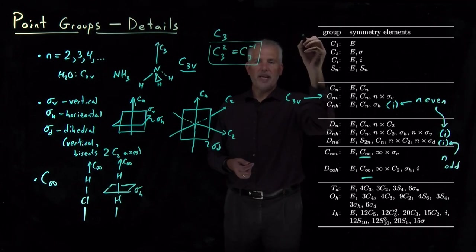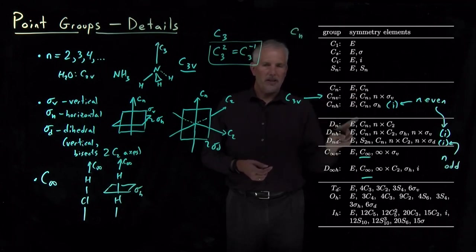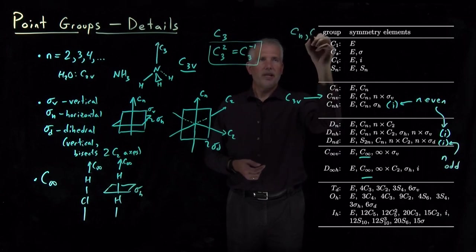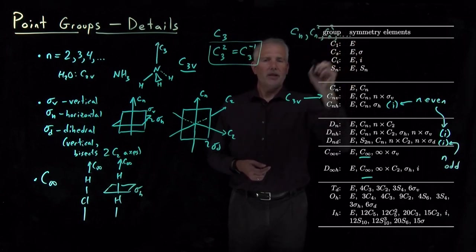In fact, any time we have a CN symmetry element in this table, we also assume that it's in there as CN squared and CN cubed and as many different copies of that.